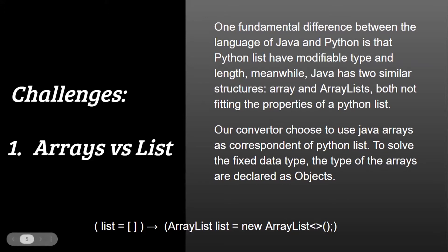As can be seen, the bottom line shows how a standard list and ArrayList will be created. When the converter sees a list being created in the Python code on the left, it's going to write the corresponding Java line into the Java output file.